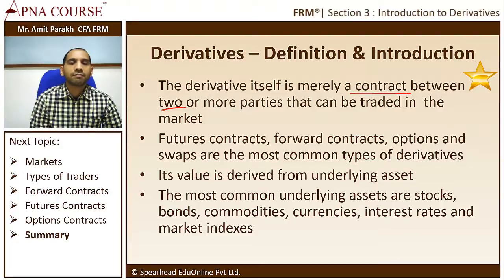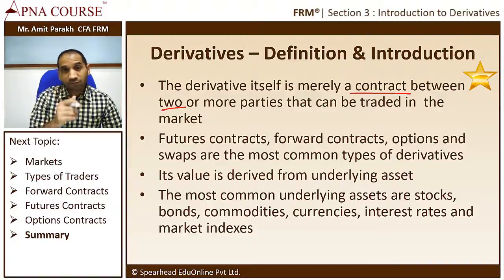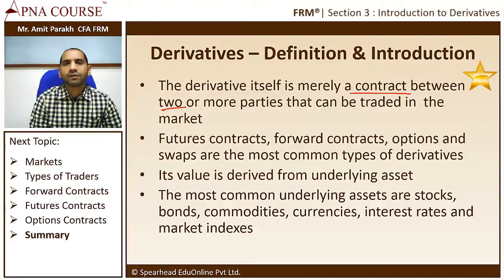An important point: a derivative is not an asset itself, but derives its value from an underlying asset — stocks, bonds, currencies, interest rates, or market indices. Note that an interest rate is not an asset but a variable that can be used to construct a derivative instrument. For example, a forward rate agreement is a derivative based on interest rate, and it assumes value depending on what the interest rate is on the day of settlement.